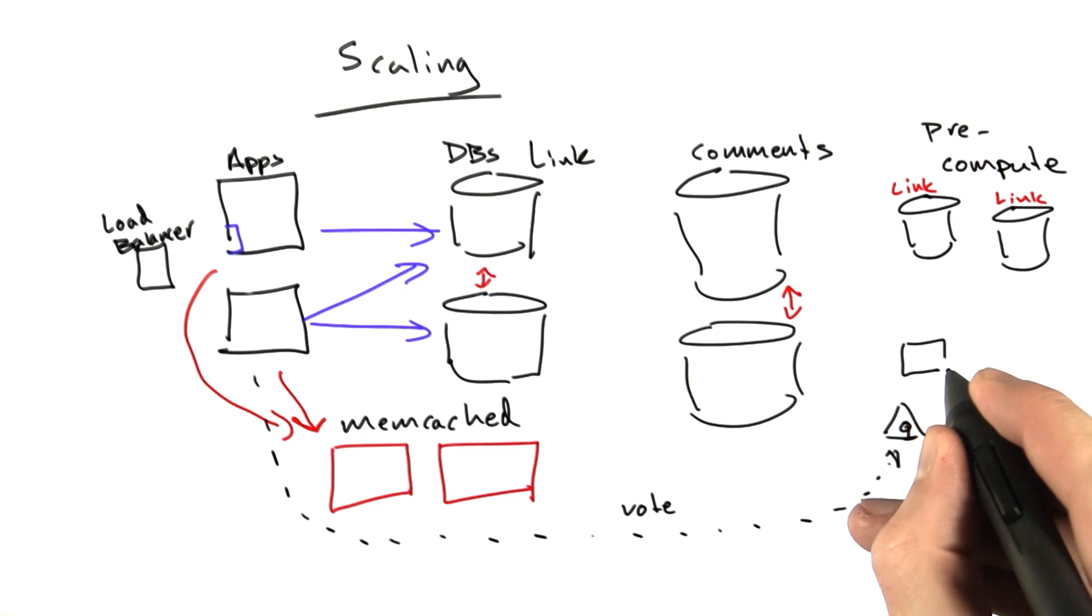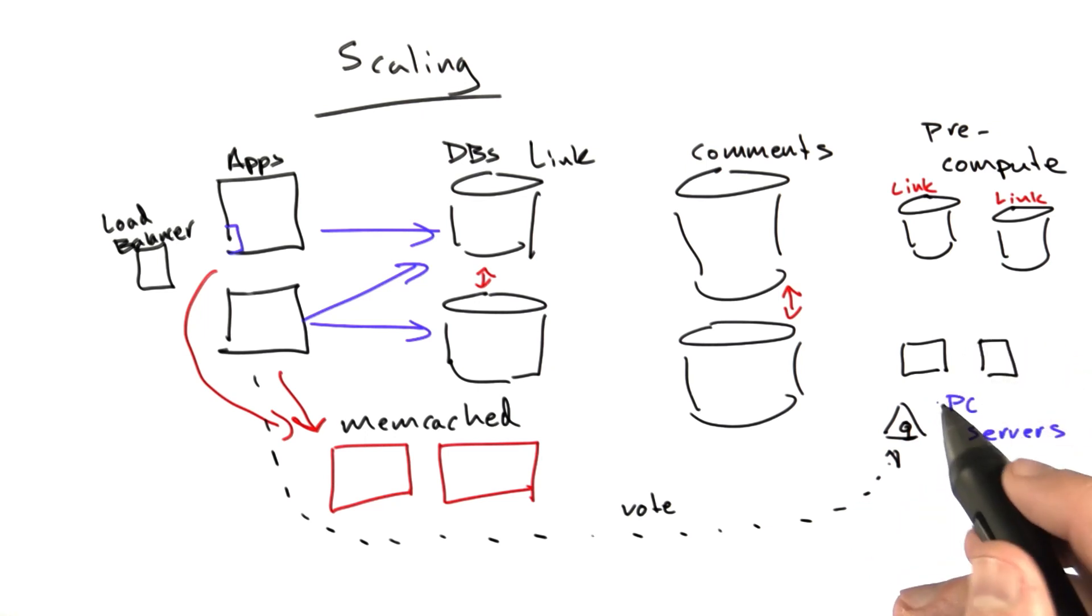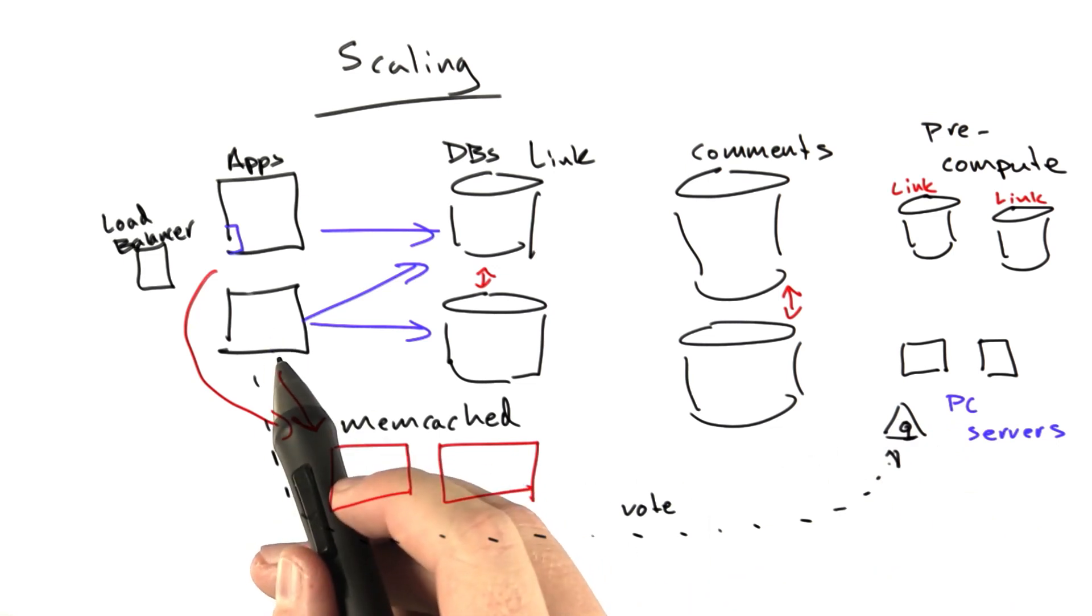Then we had a couple other machines that we called the pre-compute servers. What these would do is they would take jobs off the queue. When a link was voted on, the apps would add a number of jobs to the queue.